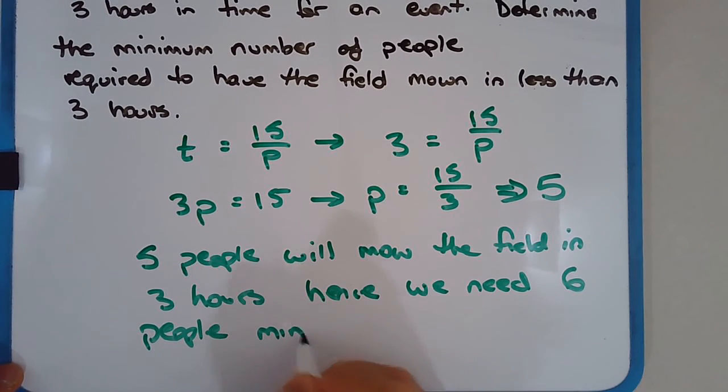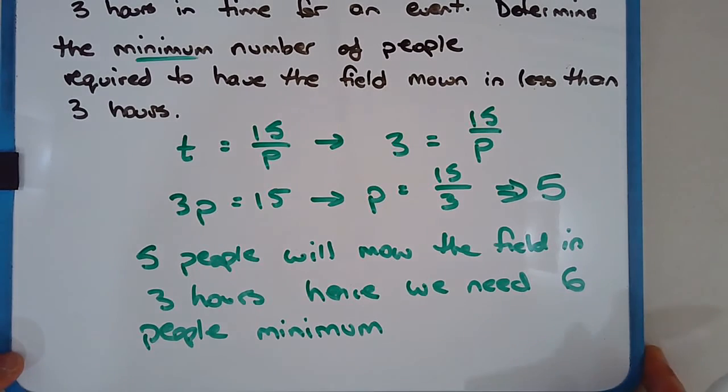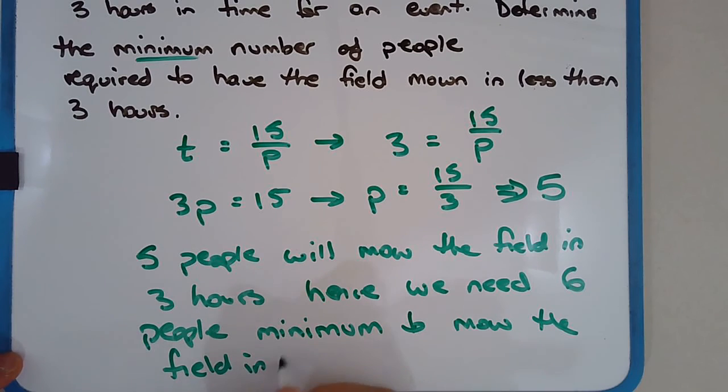Minimum. You can obviously put seven, eight, nine. You can put 50 people if you like, but we want the minimum number of people. So three hours. Hence, we need six people minimum to mow the field in less than three hours.